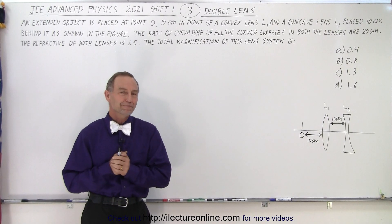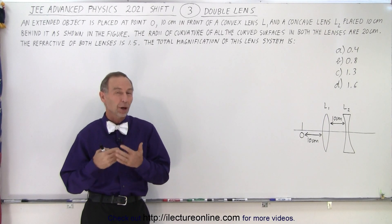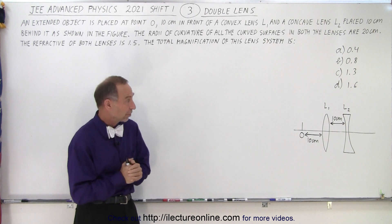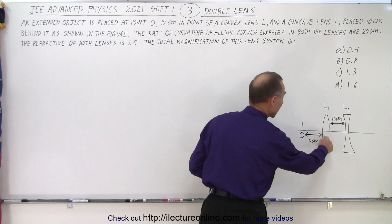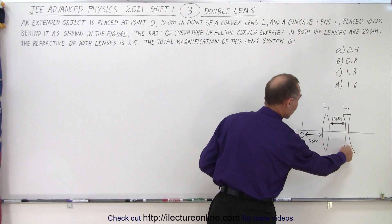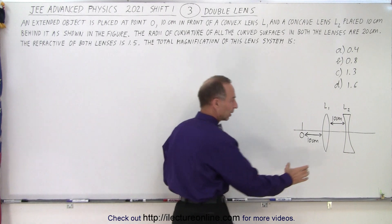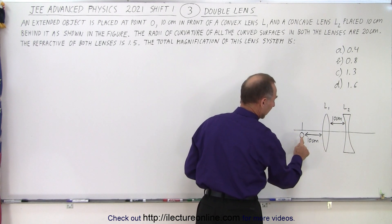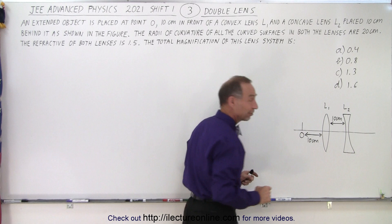Welcome to our lecture online. Our next problem deals with a double lens system — two lenses. One is a concave and one is a convex lens. Notice the two lenses are 10 centimeters apart and an object is placed 10 centimeters in front of the first lens.